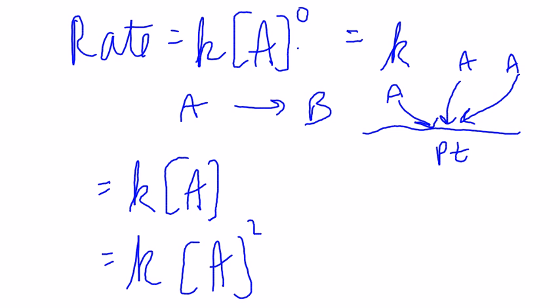The only way in which we can get these numbers, whether it's zero, one, or two, is through experiment.